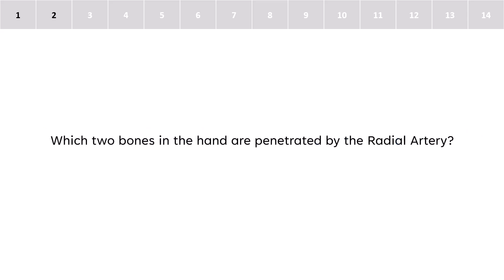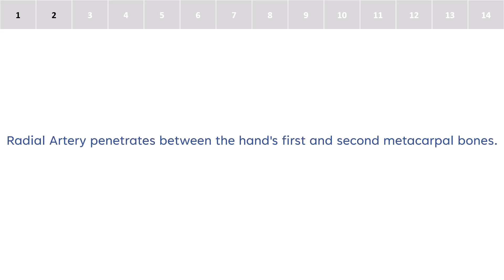Which two bones in the hand are penetrated by the radial artery? The radial artery penetrates between the hand's first and second metacarpal bones.